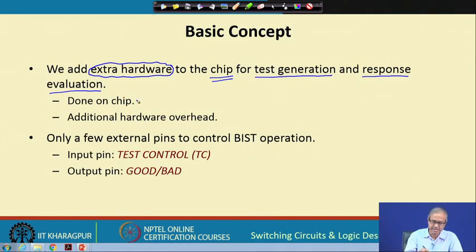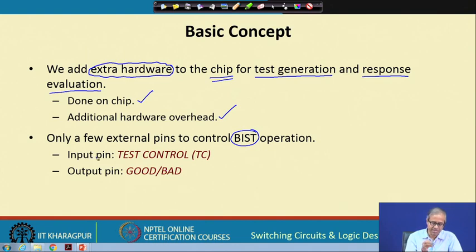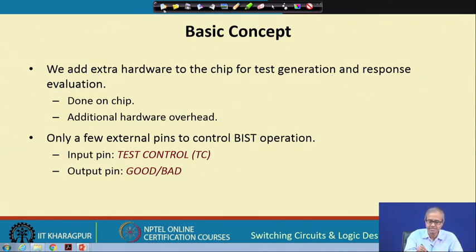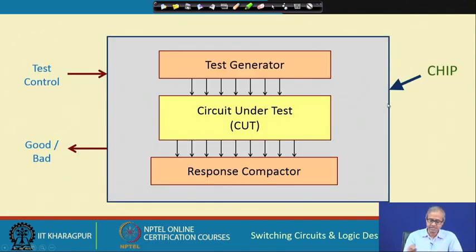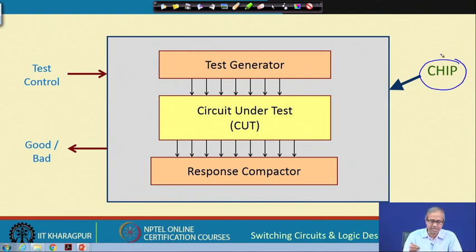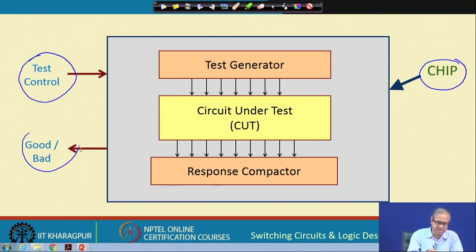This will be done on the chip, and because of the extra hardware there will be some additional signals involved. To support this kind of built-in self test — in short, BIST operation — we need two additional pins. One is an input pin which will be something like an activation signal: I can tell the chip to test itself, a test control pin. And one output pin through which the chip will tell us whether the chip is good or bad.